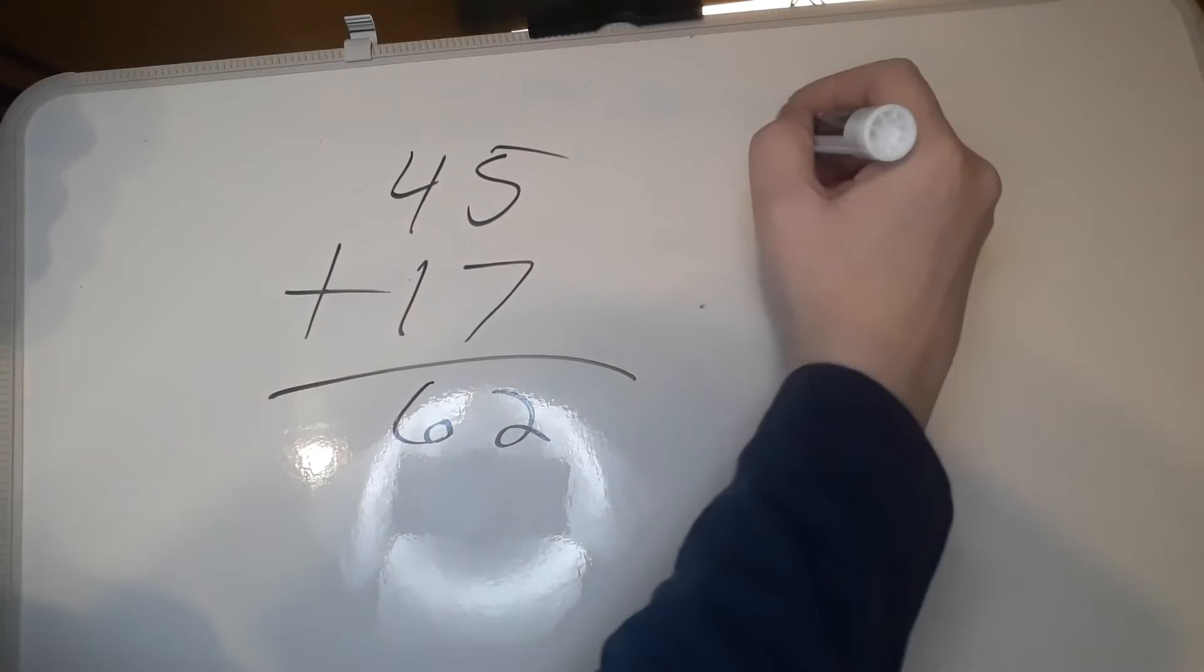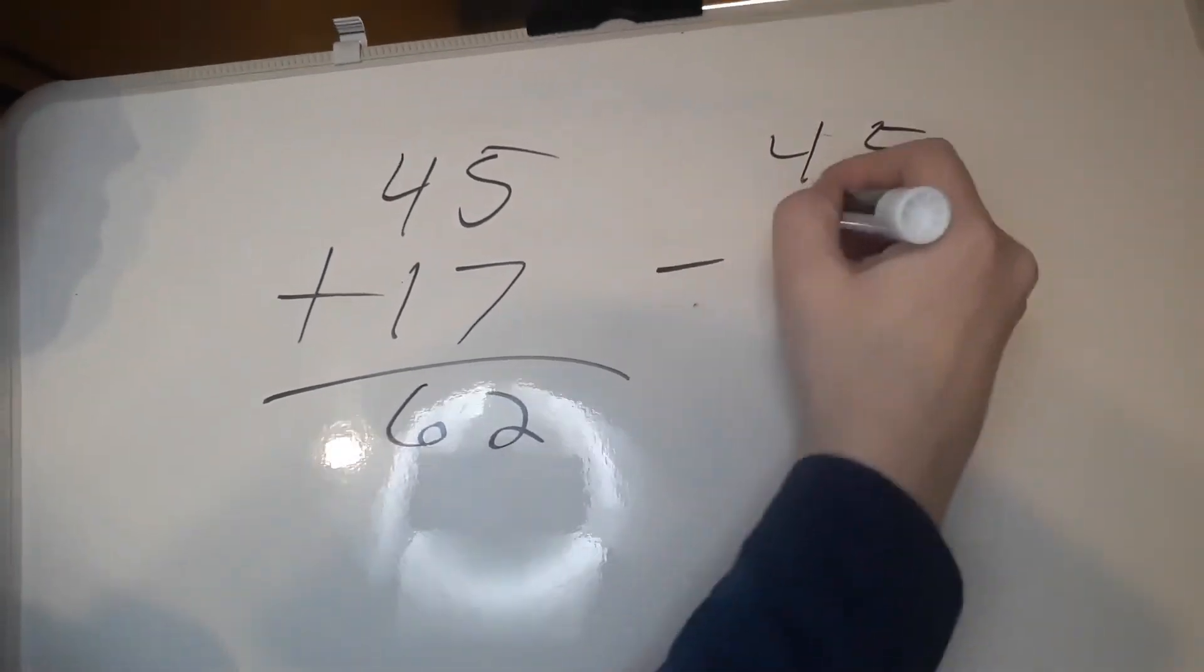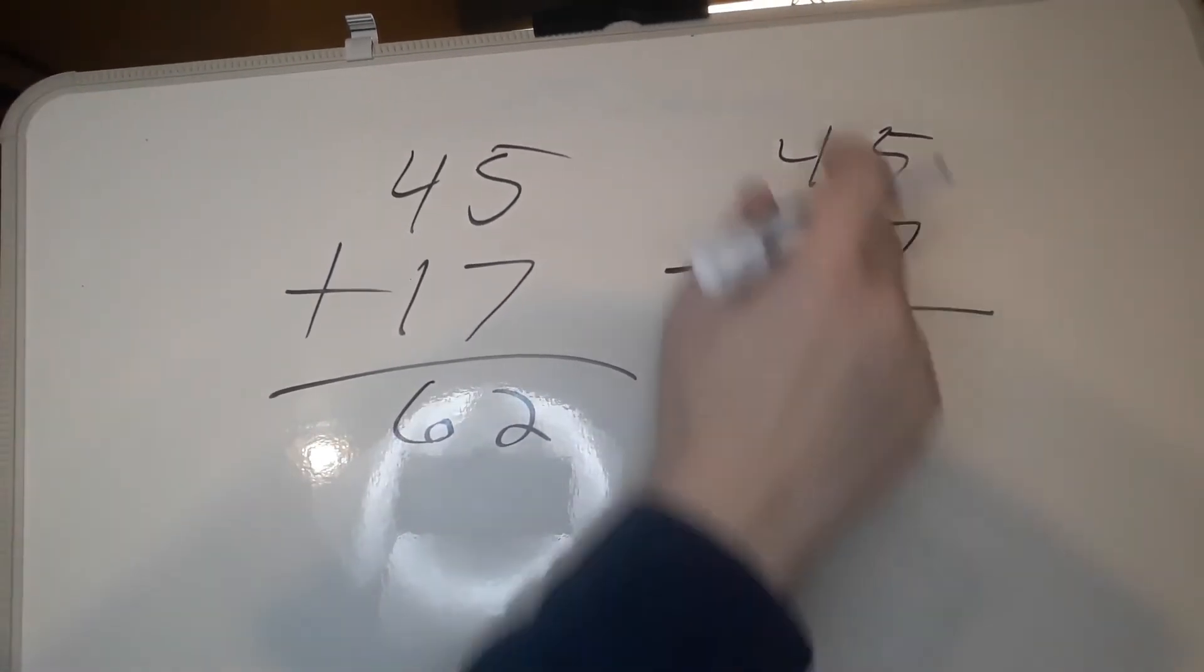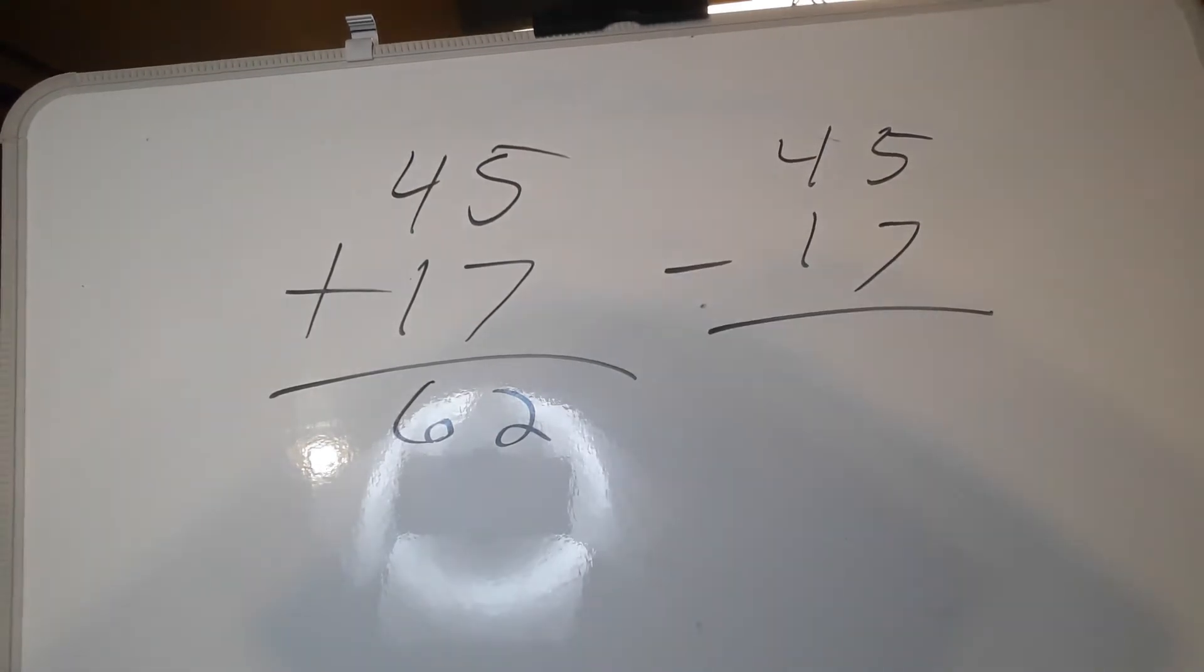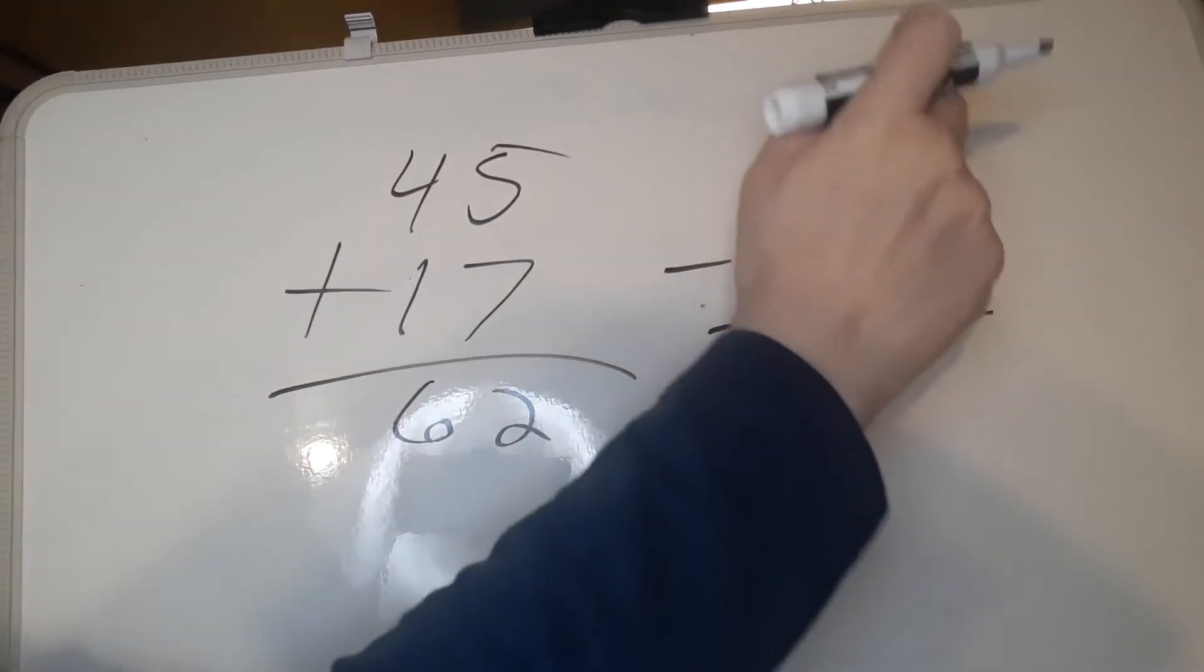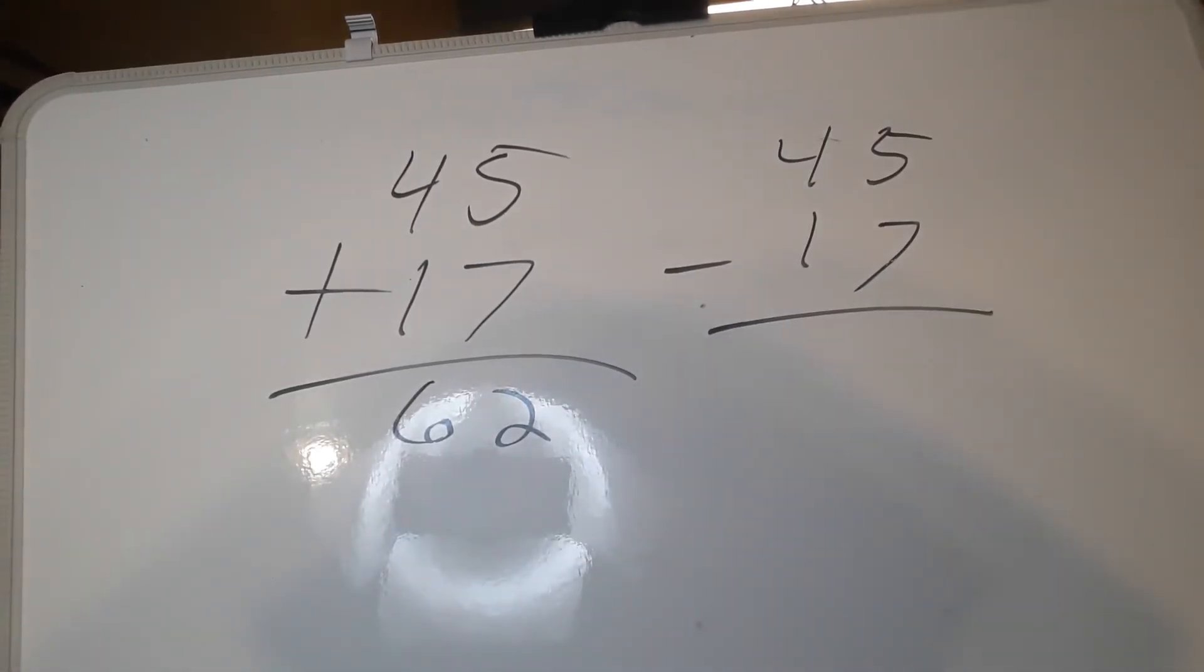Now if we're subtracting: 45, 35. We take 5 out of the 7 to counter that 5, so we have 30 minus 2 is 28.